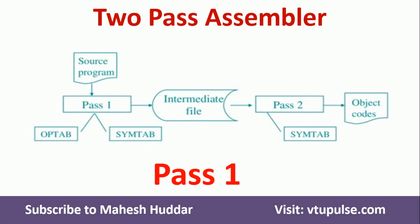Hi, welcome back. In the previous video, I discussed how to convert an assembly language program into an object program. To convert an assembly language program into an object program, we need to pass the assembler. In this video, I will discuss Pass 1 assembler, and in the next video, I will discuss Pass 2 assembler.